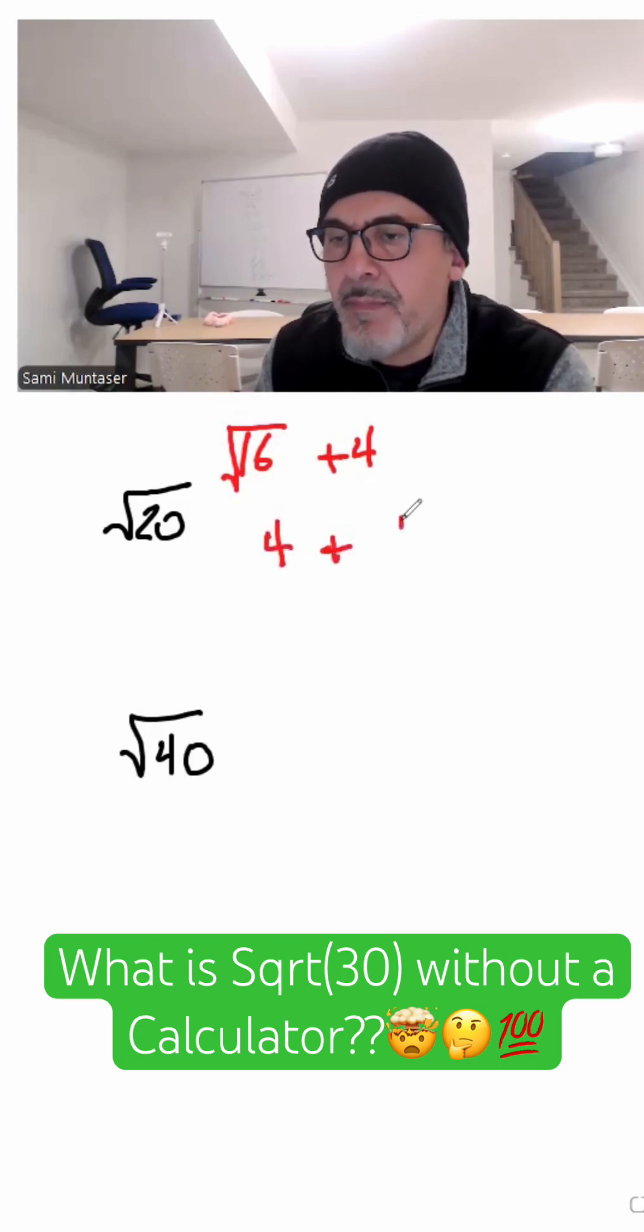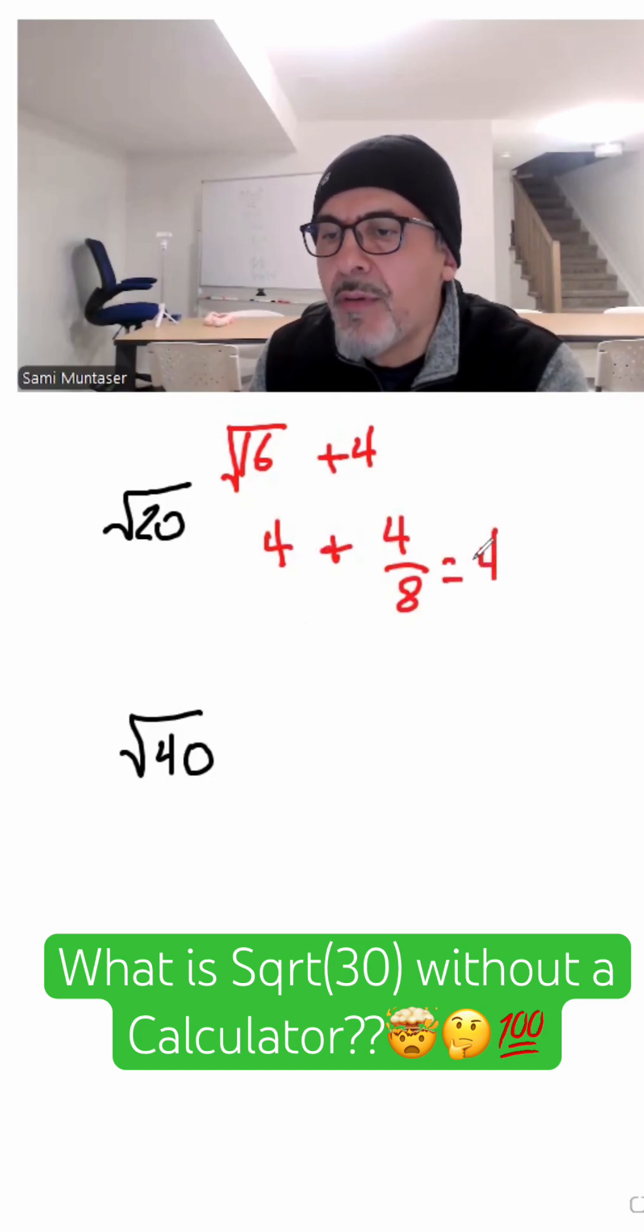Plus the 4 that's a remainder, and we have to divide it by double of the 4 right here, which is 8. And therefore my answer would be 4, and 4 divided by 8 here is half, or 0.5.